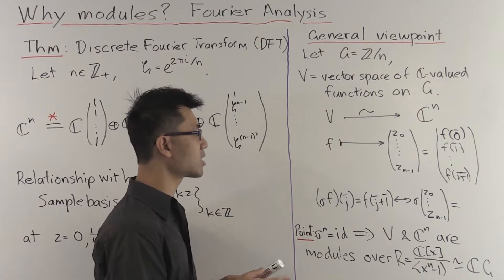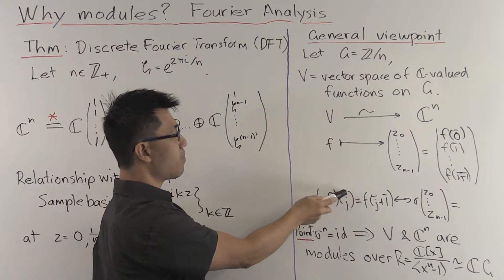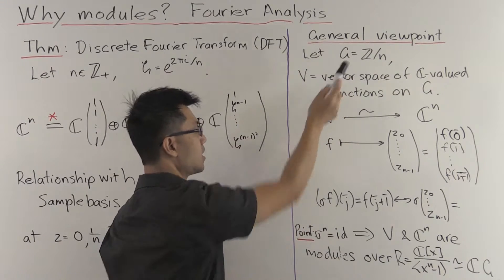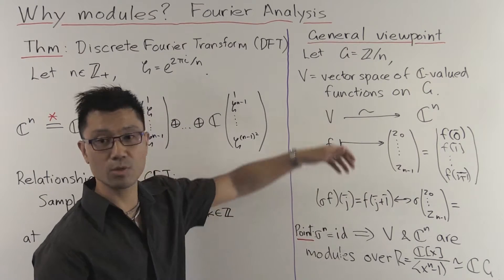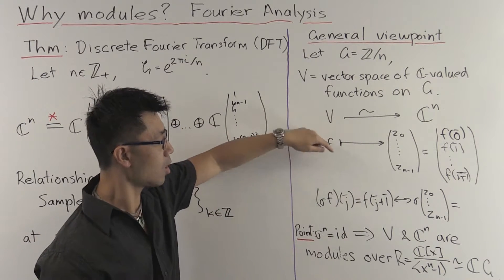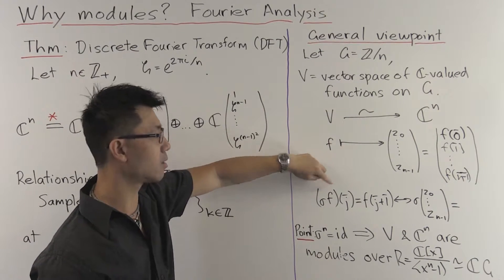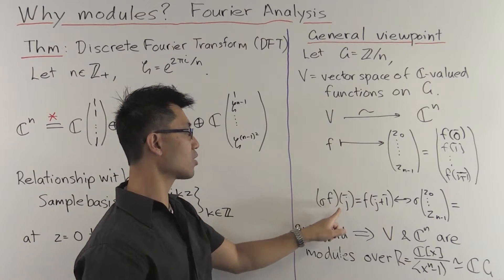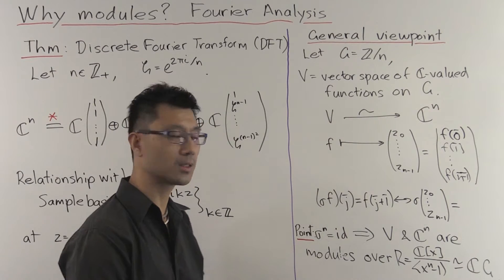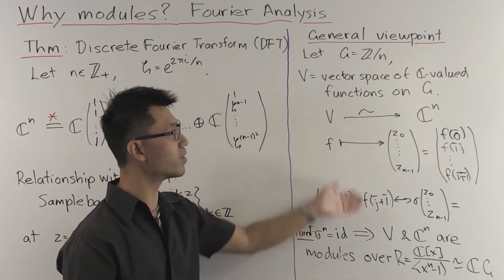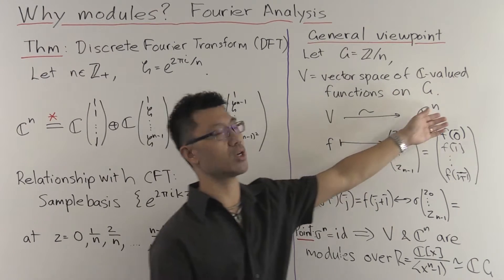Suppose, for example, you want to translate by 1. So that means that you send j̄, the residue of j mod n, an element inside here, and you can add 1̄ to it. And the corresponding symmetry on the functions is as follows. What you can do is you can send a function f to a new function σf. And that's going to be the function whose value at j̄ is f(j̄ + 1). So this gives you a symmetry of this vector space V, and hence also a symmetry of this C^n.